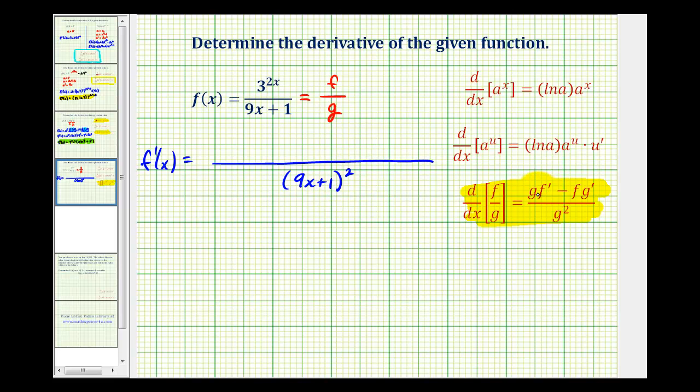Then we'll have g times f prime minus f times g prime, or the denominator times the derivative of the numerator, plus the numerator times the derivative of the denominator.